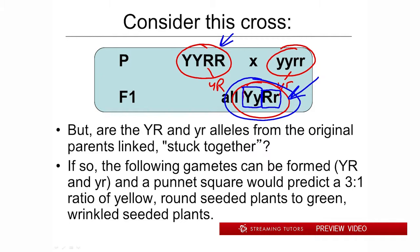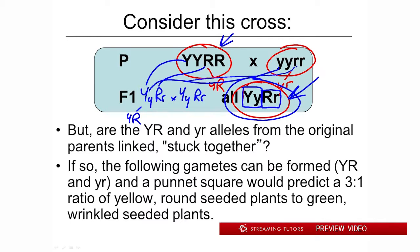If we're going to self it, we're going to do this cross — big Y, little y, big R, little r times itself in the F1. So what kind of gametes can those plants make? Well, think of it this way: if the big Y and the big R that came from that parent are somehow stuck together, they're going to remain stuck together. And that would imply that these F1 could only make two types of gametes — big Y, big R — and the other ones that came from the other parent, little y and little r. If they were somehow stuck together, those would be the only gametes that these things were capable of making.